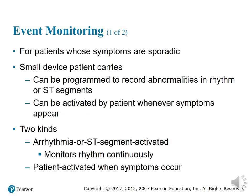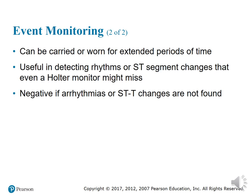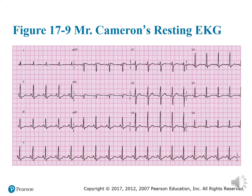Event monitoring is for patients whose symptoms are sporadic. A small device the patient carries can be programmed to record abnormalities in rhythms or ST segments, or can be activated by the patient whenever symptoms appear. There are two kinds: arrhythmia or ST segment activated monitors that run continuously, and patient-activated monitors triggered when symptoms occur. The device can be carried or worn for extended periods and is useful in detecting rhythms or ST segment changes that even a Holter monitor might miss. It is considered negative if arrhythmias or ST or T-wave changes are not found.